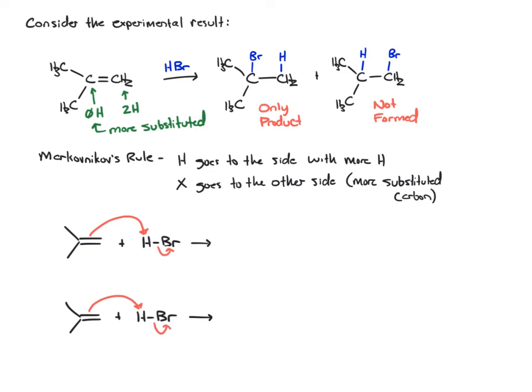On the top example, I'm going to draw the intermediate, and I'm going to put hydrogen on the right, which means the carbocation ends up on the left carbon that was part of the double bond. If you do the opposite, now I'll put the hydrogen on this left carbon, and we get the carbocation on the right. Now, compare both of these intermediates.